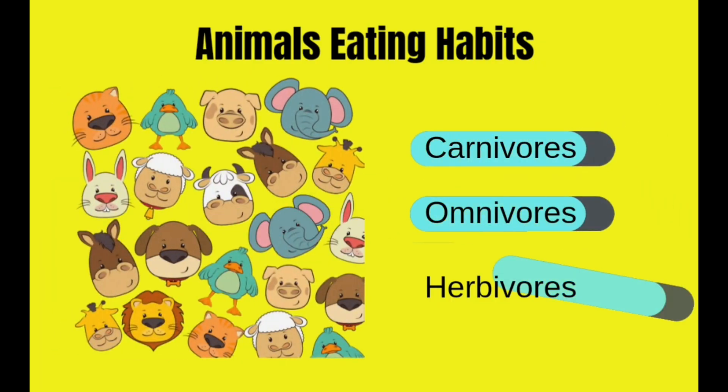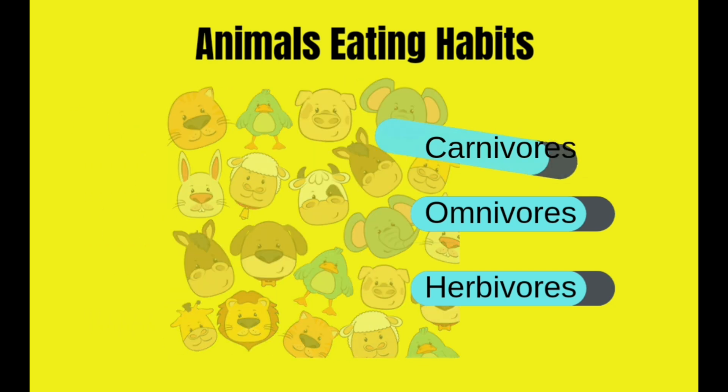Animals' eating habits can be divided into three groups: carnivores, omnivores, and herbivores.